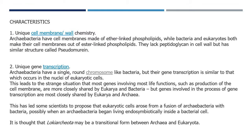Now about characteristics. First is unique cell membrane and cell wall chemistry. Archaebacteria have cell membranes made up of ether-linked phospholipids, while bacteria and eukaryotes have ester-linked phospholipids. So the key difference is that archaea have ether-linked phospholipids. The cell wall lacks peptidoglycan but has a similar structure known as pseudomurine. Second characteristic is unique gene transcription: archaebacteria have a single round chromosome like bacteria, which is present in the cell cytoplasm.